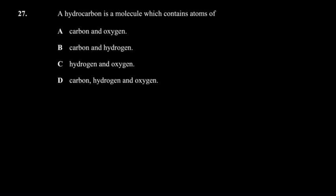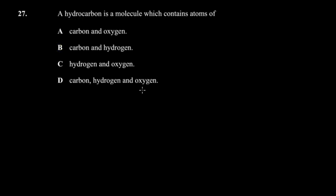Question 27: a hydrocarbon is a molecule which contains atoms of what? The prefix 'hydro' tells you hydrogen is present, and 'carbon' tells you carbon is present. A hydrocarbon contains carbon and hydrogen only. If it includes something else, like oxygen, it's no longer a hydrocarbon. Alkanes and alkenes are all hydrocarbons.